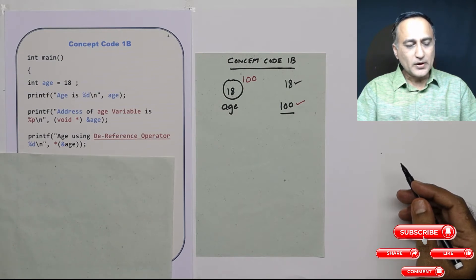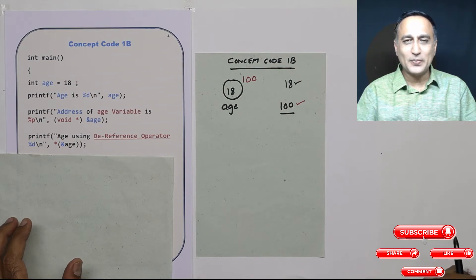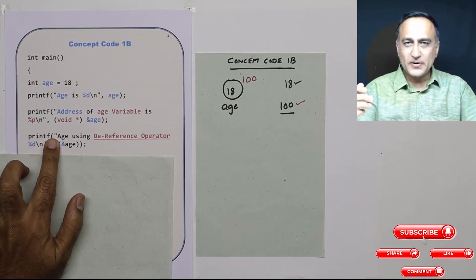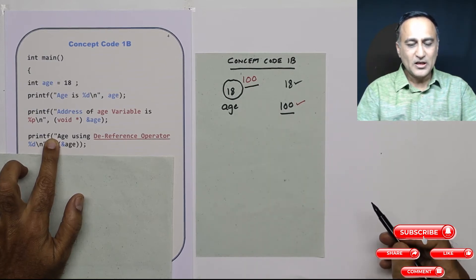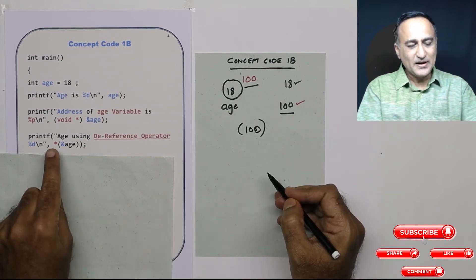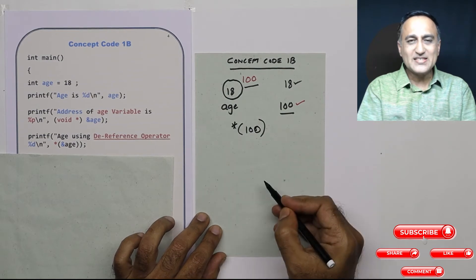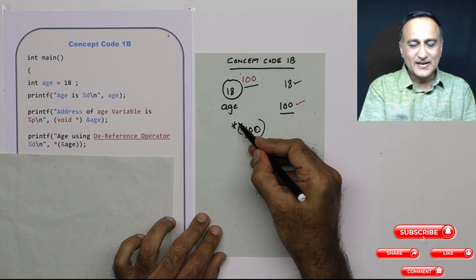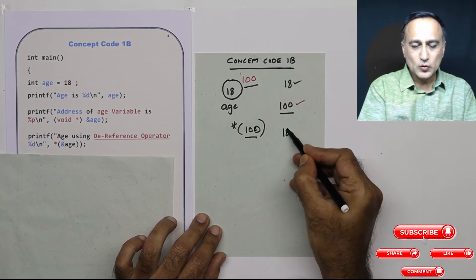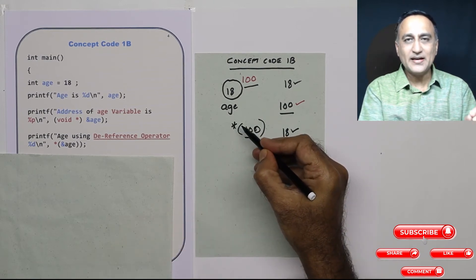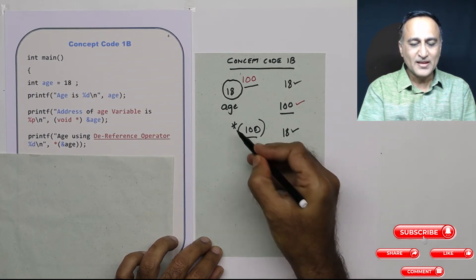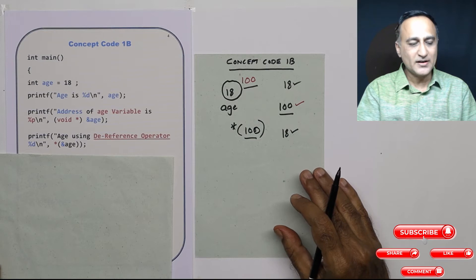Now I am going to print `age` using the dereference operator, which was discussed in the first program. If I just print `&age`, it prints 100. But there is a star outside the parenthesis — `*(& age)`. What this star indicates is: give me the content or value at address 100. At address 100, the content is 18, so 18 is going to be printed. This star operator is known as the dereference operator.